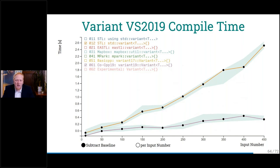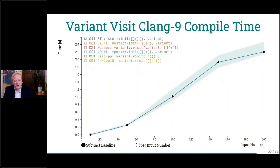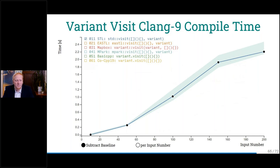We have a specific use case for a variant — the visit method. This visit method is very prone to slow runtime, but is it also slow to compile? In this benchmark I created a variant with the input number of elements and then visited all versions of it — we measure compile times, not runtime. Creating all these visitor implementations takes a lot of compile time. The STL when visiting is not the fastest. Mapbox — oh, that's not good. Visiting a variant is basically what you always do, so that's a problem.